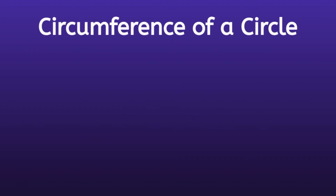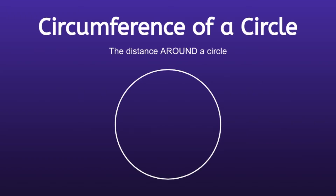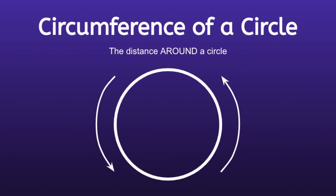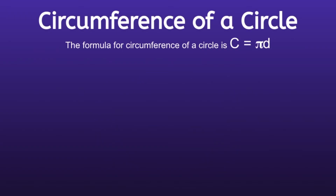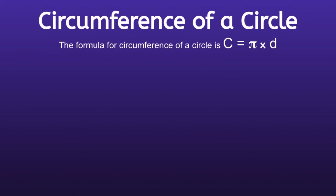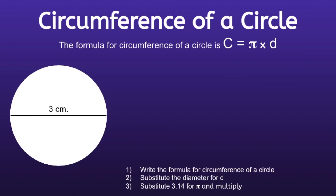Circumference of a circle is the distance around a circle. So if I were to draw a circle, circumference would be the distance around it. The formula for circumference of a circle is C equals pi times d, which means circumference is equal to pi times the diameter. In order to find the circumference, we're going to follow three steps. Step 1 is to write the formula: C equals pi times d.